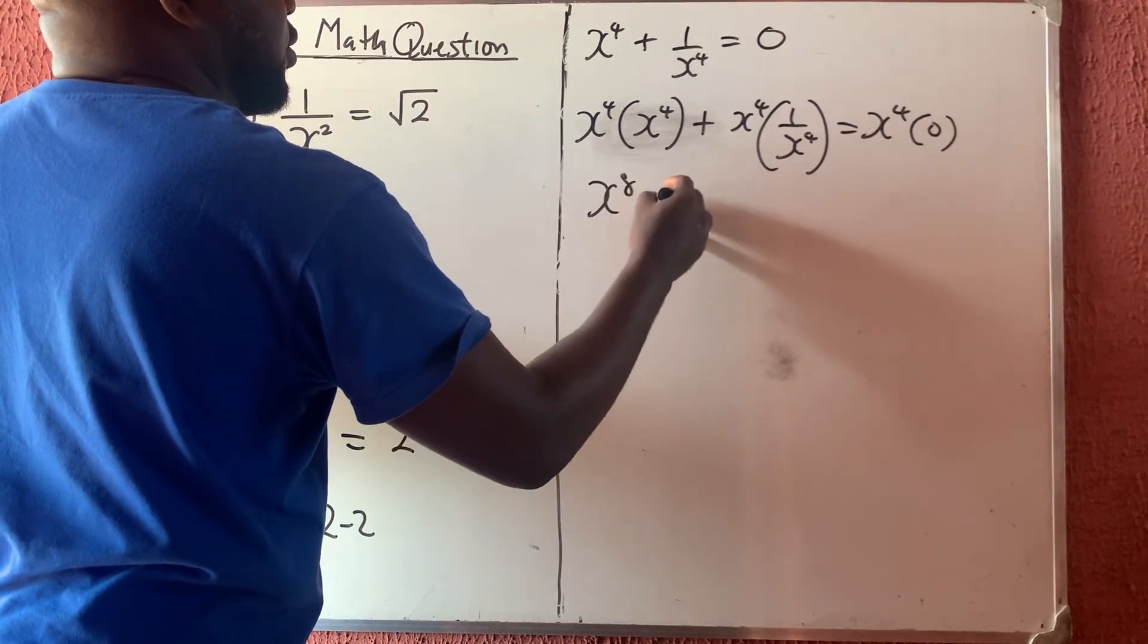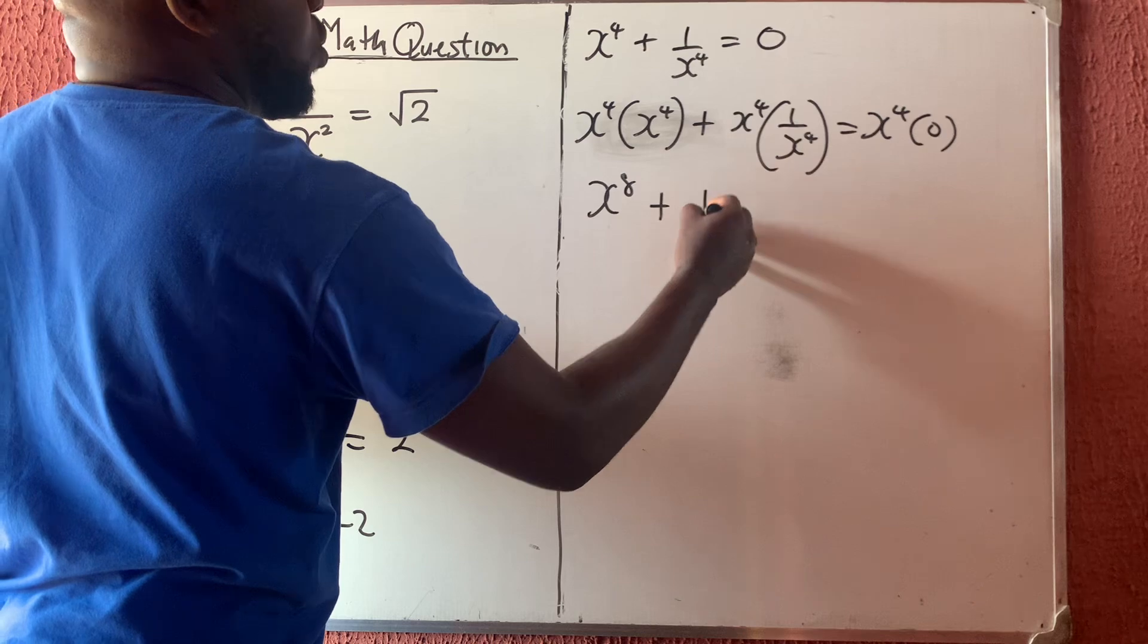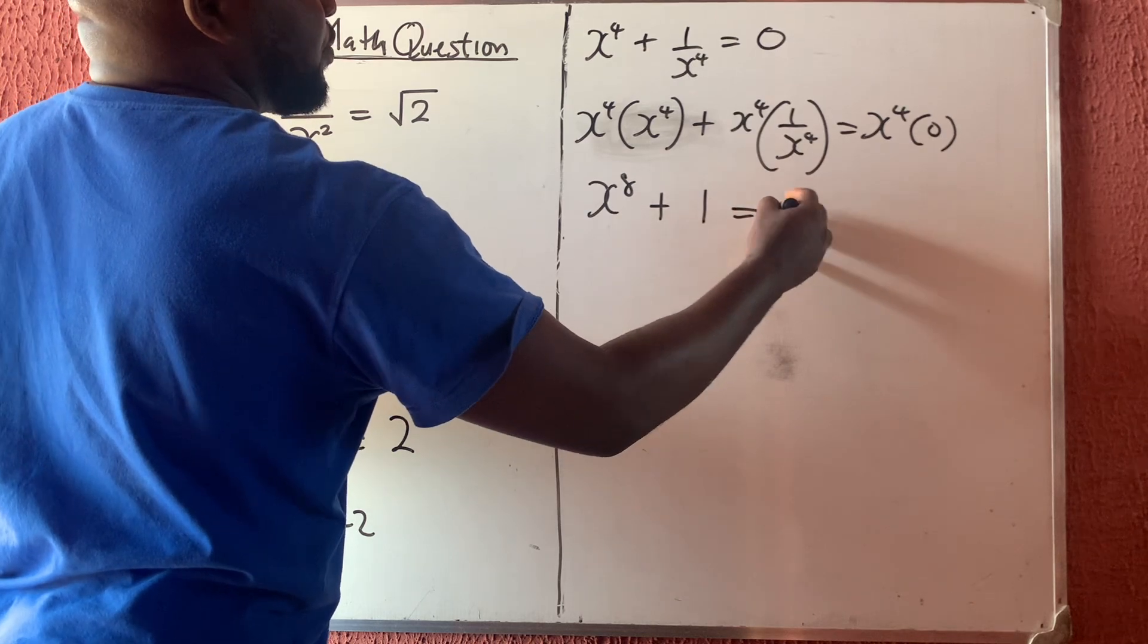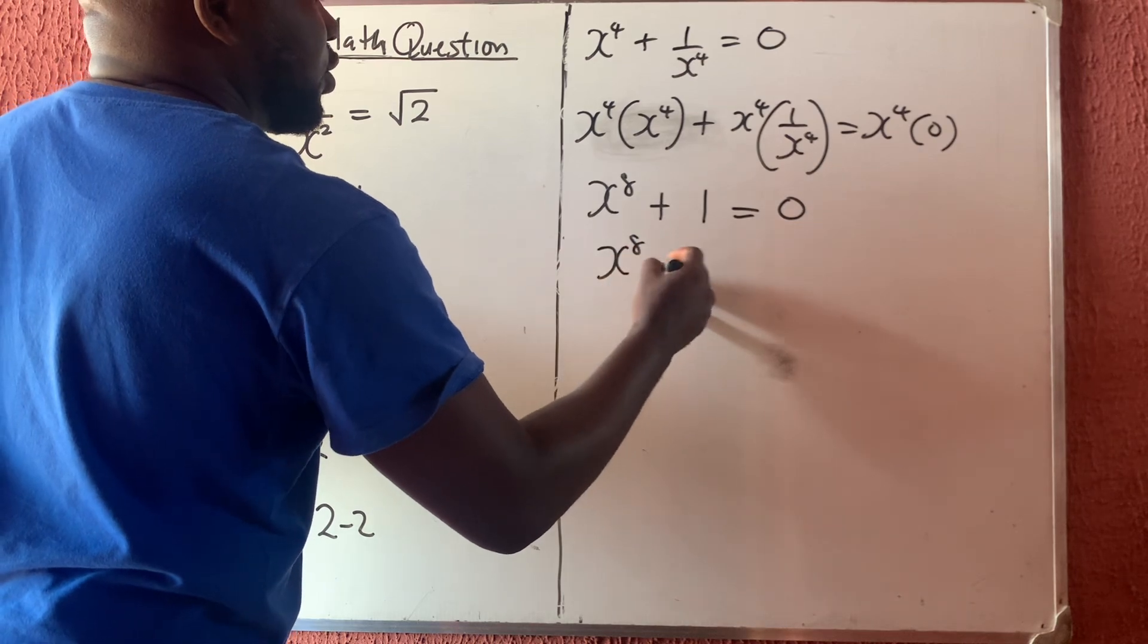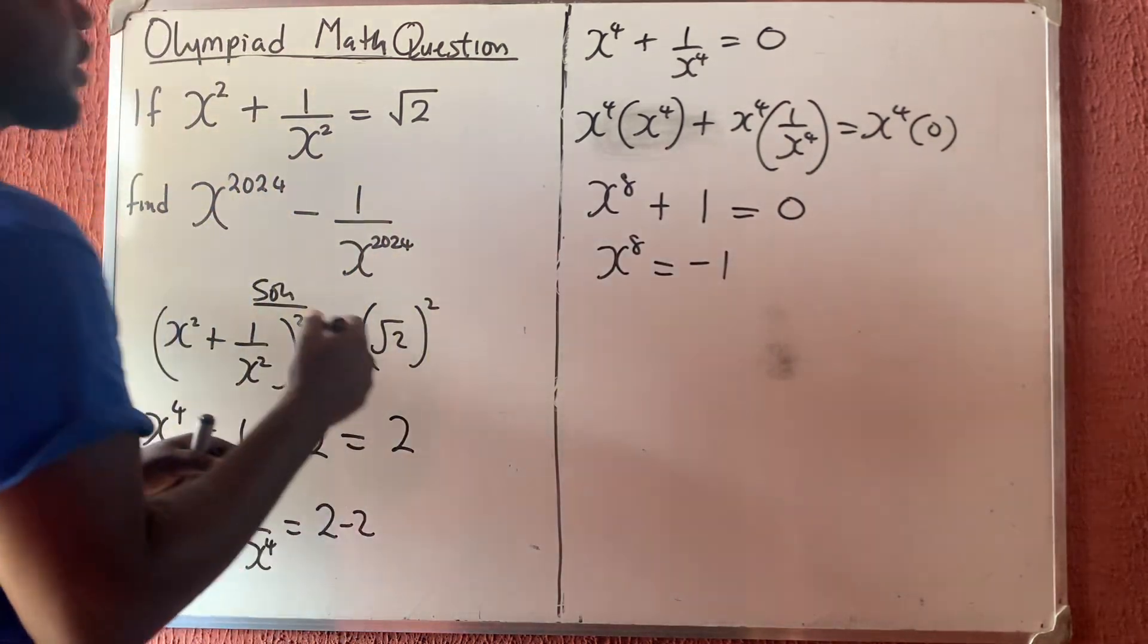This times this will give you x to the power 8 plus this times this will give you 1 is equal to what? 0. So now this means that x to the power 8 is equal to minus 1.